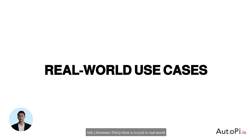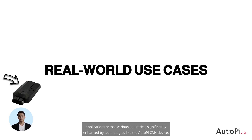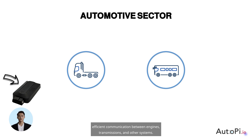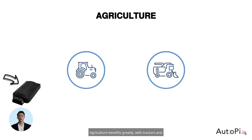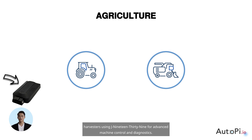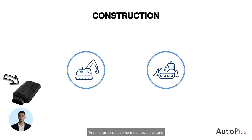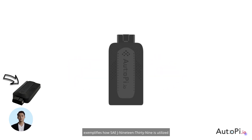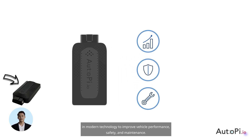SAE J1939 is crucial in real-world applications across various industries, significantly enhanced by technologies like the Autopi CM4 device. In the automotive sector, this standard is key in heavy-duty vehicles like trucks and buses, ensuring efficient communication between engines, transmissions, and other systems. Agriculture benefits greatly, with tractors and harvesters using J1939 for advanced machine control and diagnostics. In construction, equipment such as cranes and bulldozers rely on J1939 for robust and reliable operations. The integration of devices like the Autopi CM4 exemplifies how SAE J1939 is utilized in modern technology to improve vehicle performance, safety, and maintenance.